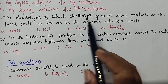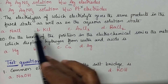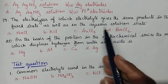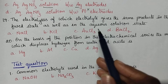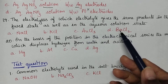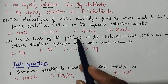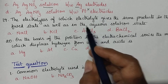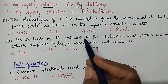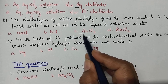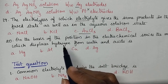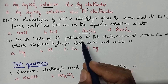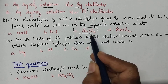The electrolysis of which electrolyte gives the same products in the fused state as well as in the aqueous solution state? In both the molten and aqueous solution states, the products at the cathode and anode are the same when the electrolyte involves a noble metal. Option C is the right answer.